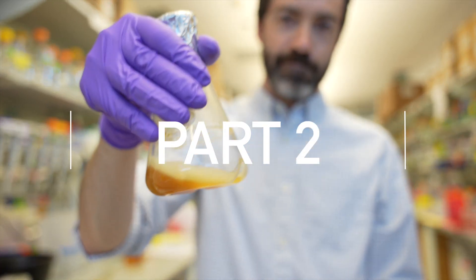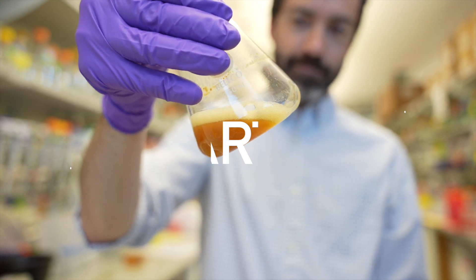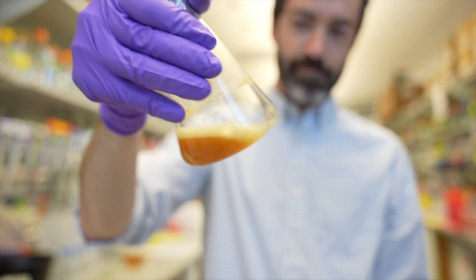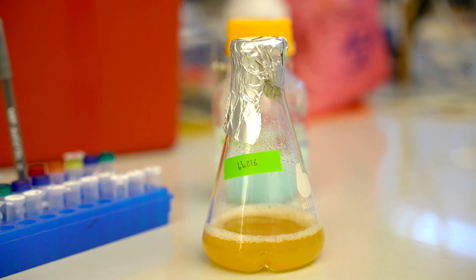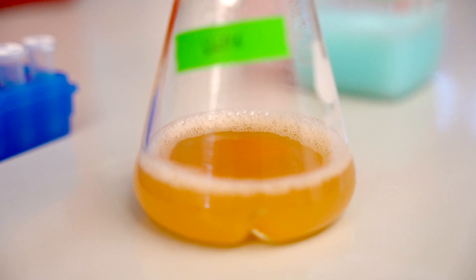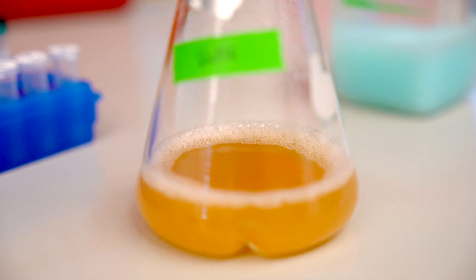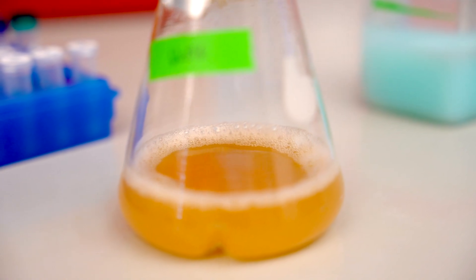For part two, we're starting right where we left off, with a flask full of billions and billions of cells. These bacterial cells have been growing and growing and producing tons of the protein that we want to study. But before we can run any tests on this protein to figure out whether it's folded or whether it does what it was designed to do, we first need to purify it.